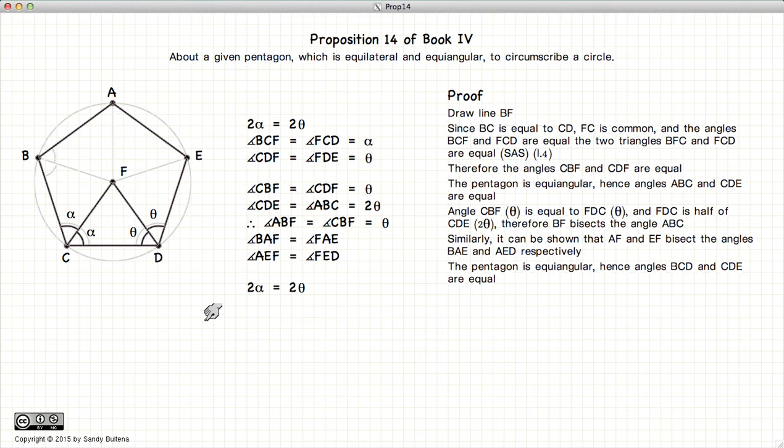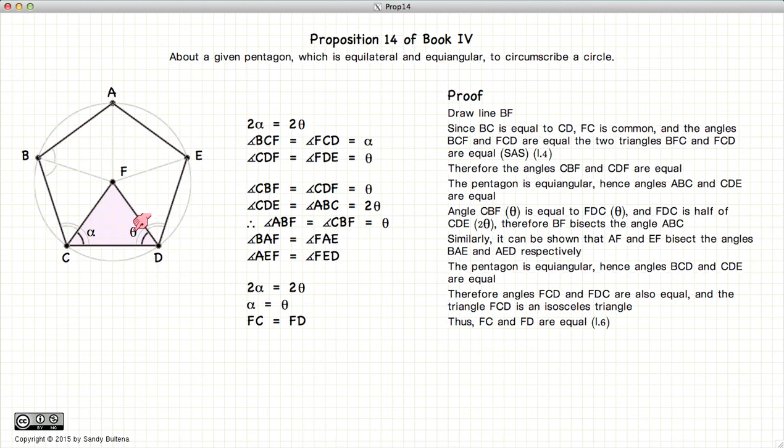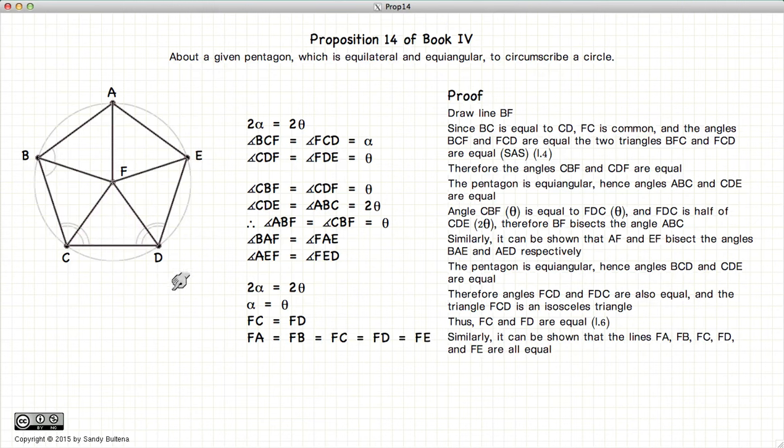Now the pentagon is equiangular hence the base angles are equal so alpha is equal to theta. Which means that this triangle here is an isosceles triangle which means that fc is equal to fb. Using the same logic we can demonstrate that fc is equal to fb which will be also equal to fa and fe and so on.